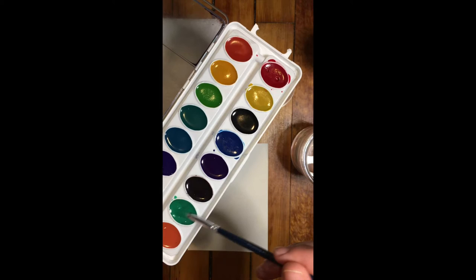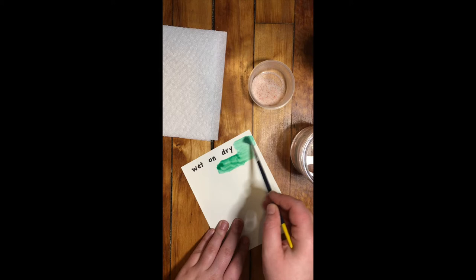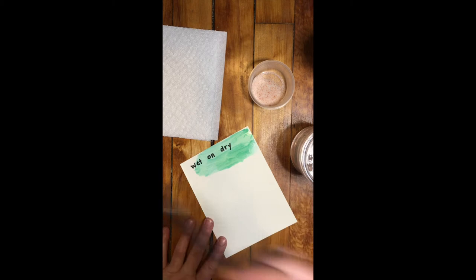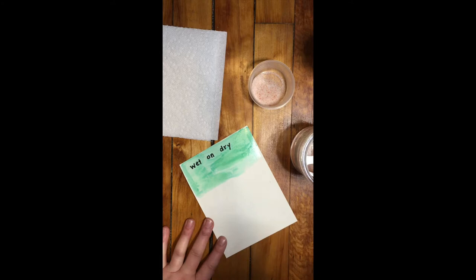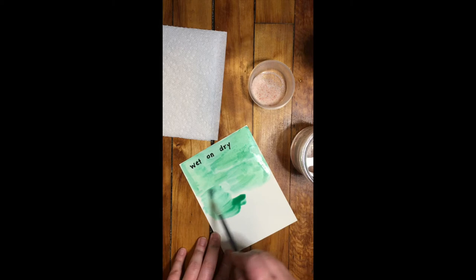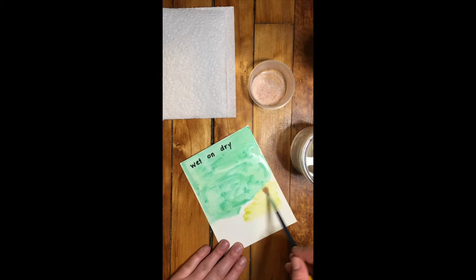So we're going to start with our wet on dry technique because we want to put our first layer of paint down and let it dry. So choose a color. First, wet your brush before putting it into the paint, then put it on to the paint color of your choice and fill in your piece of paper. So finish painting in your whole piece of paper with whatever colors you would like, and then we are going to set that piece of paper aside to let it dry completely.